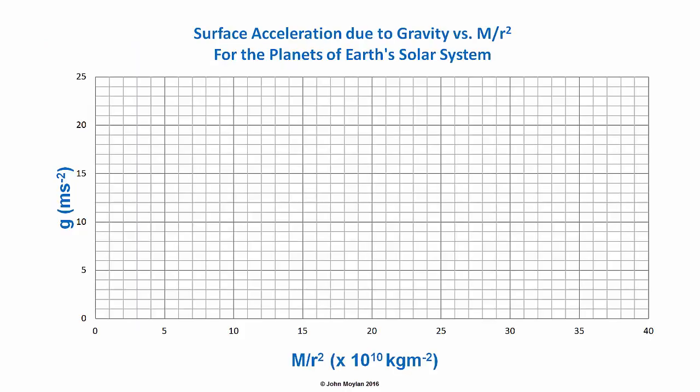This is an example of how you would lay out your graph, with a title above — always remember to put a title on your graph because it's worth marks in the exam. Acceleration due to gravity g in meters per second squared goes on the vertical axis, and M/r² × 10¹⁰ kilograms per meter squared goes on the horizontal axis.